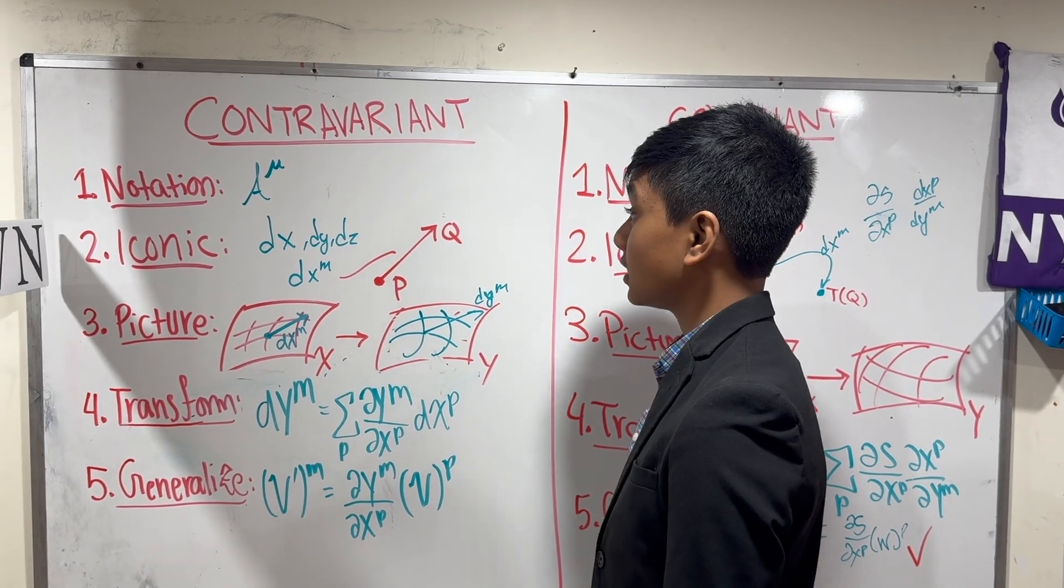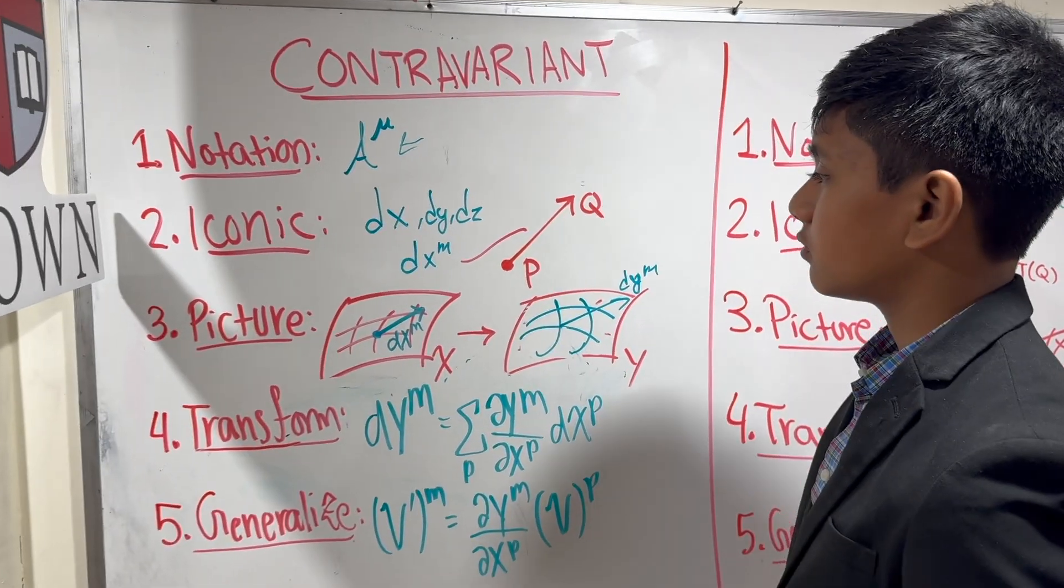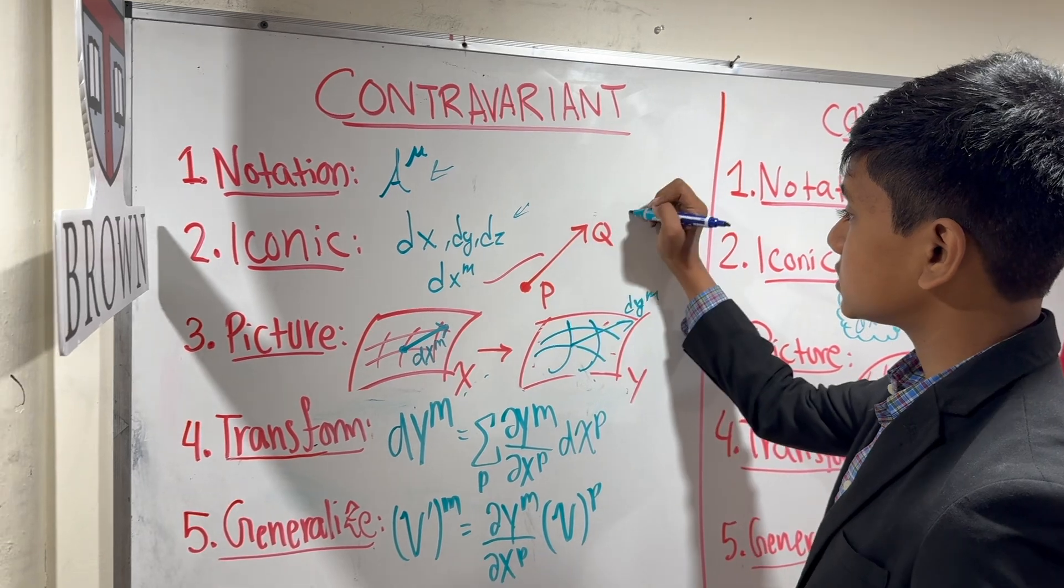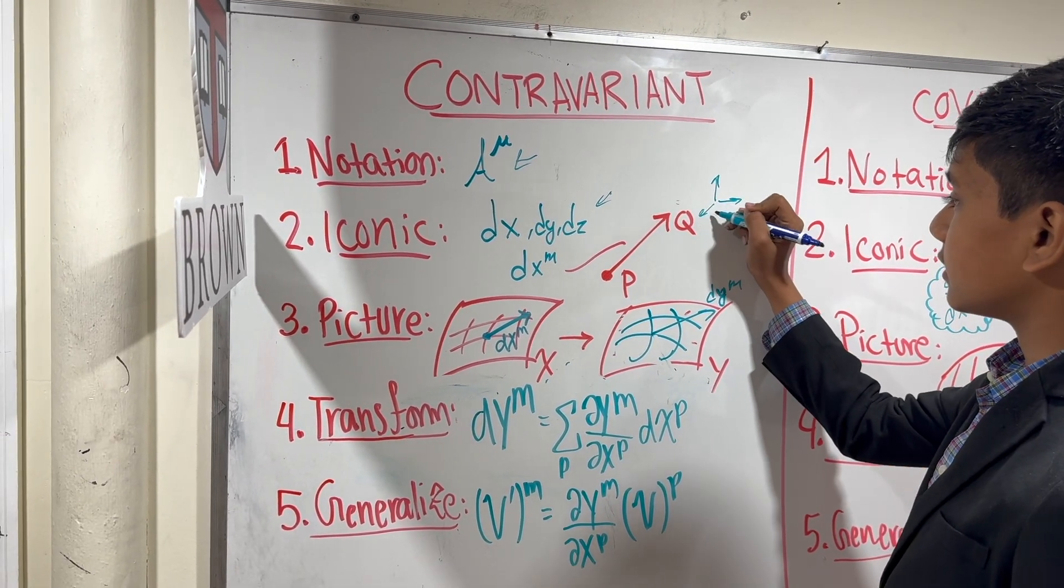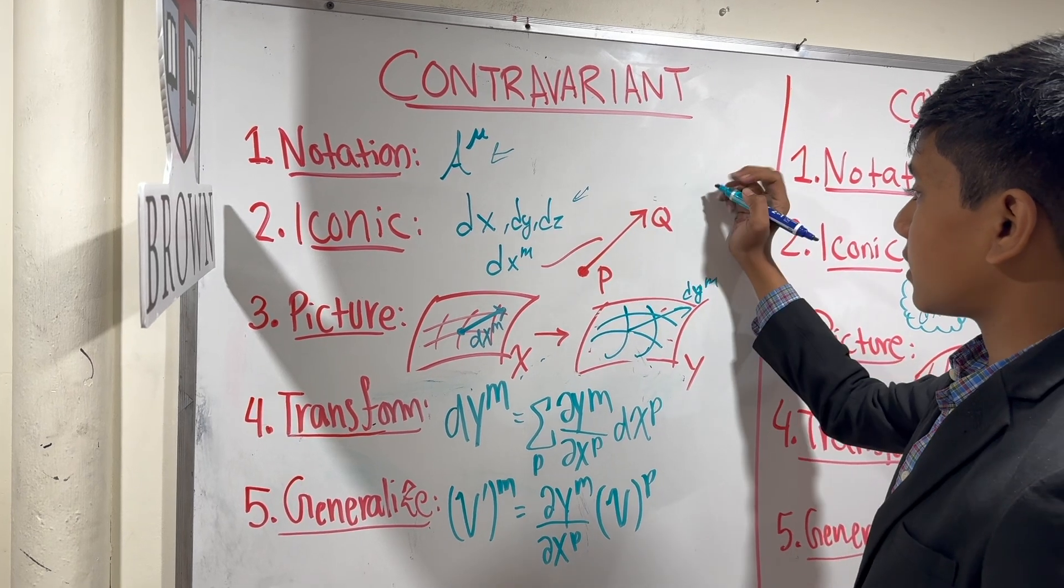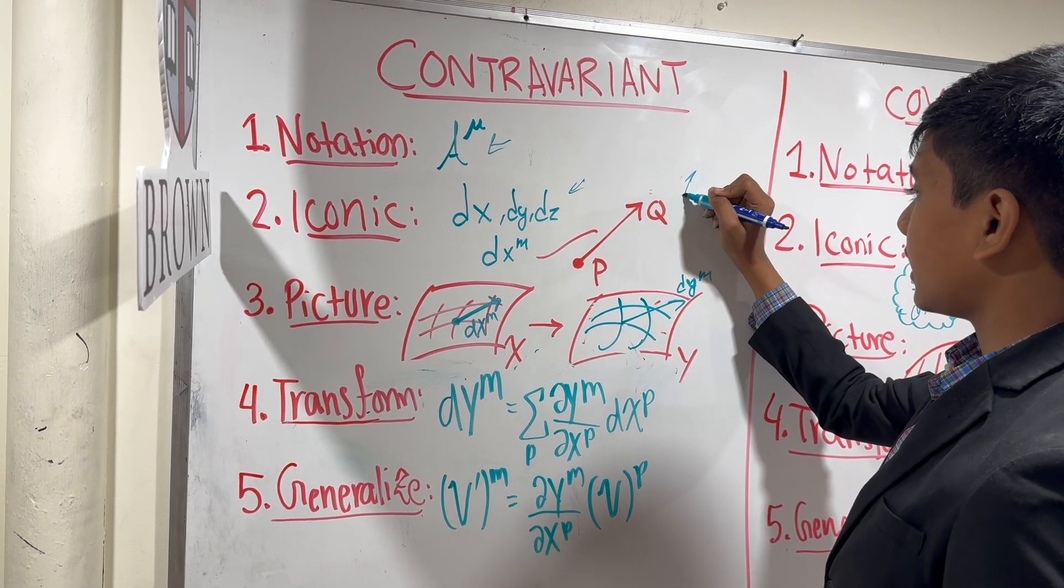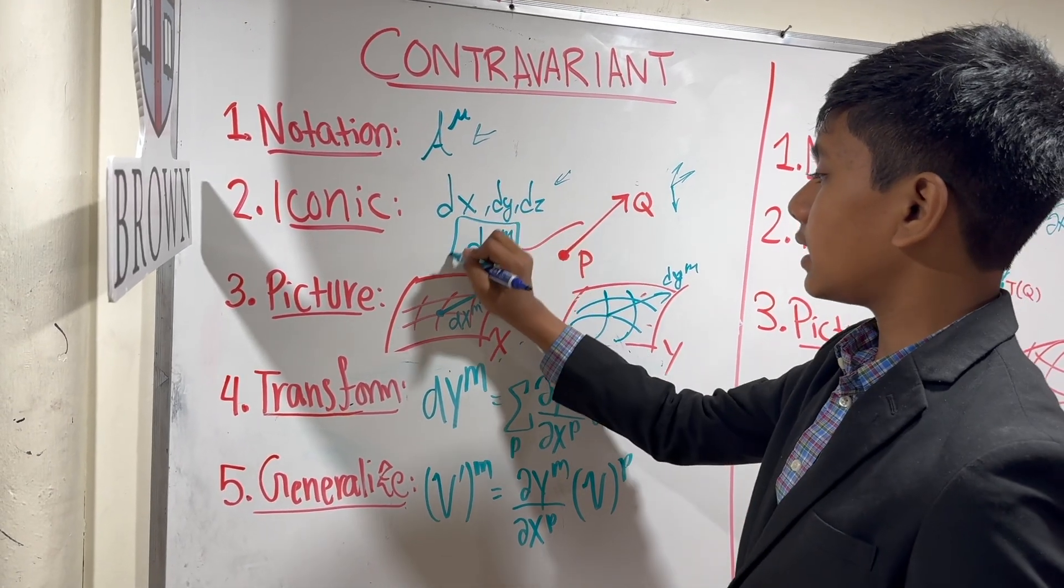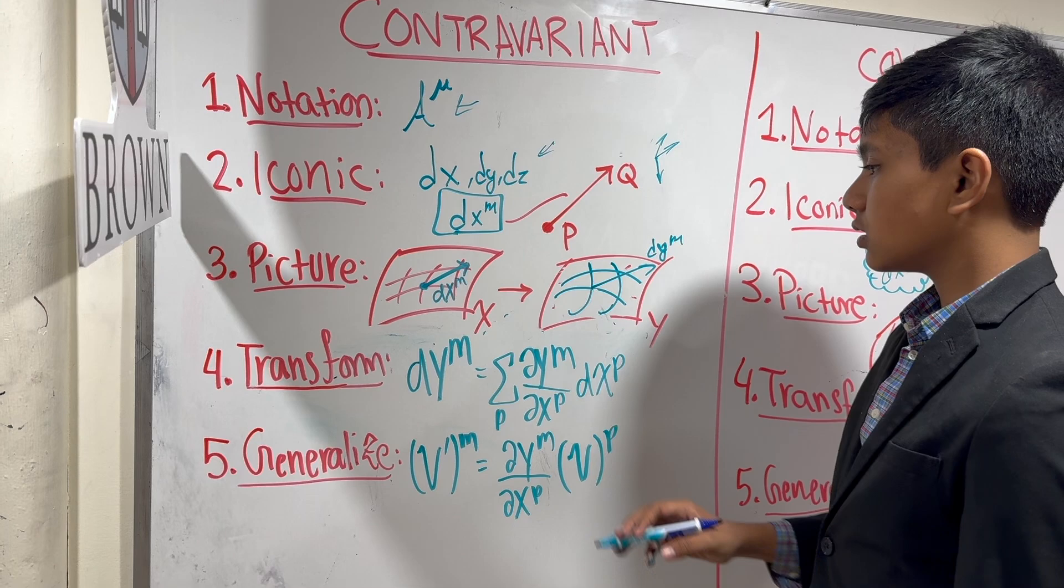Our notation is using a superscript for our index. Our iconic example is just a slight change in any of our three basis vectors or more. Obviously, our basis vectors aren't always i hat, j hat, and k hat. They can be anything we like. We just represent them as dx to the m.